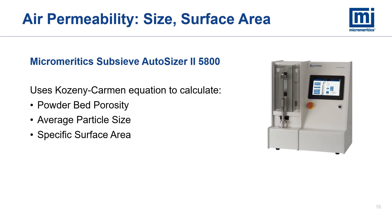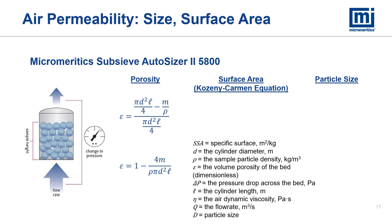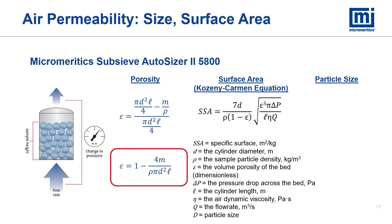The Micromeritics Sub-Sieve Autosizer 2-5800 uses air permeability and the Kozeny-Carman equation to calculate powder bed porosity, average particle size, and specific surface area. The amount of sample needed is equivalent to one cubic centimeter of skeletal volume. We used the density value calculated from the ACUPIC analysis to determine the mass needed. A powder bed is compressed to a certain height and a bed porosity is calculated. A constant airflow is applied to the bottom of the bed and the pressure drop across the powder bed is used to calculate specific surface area using the Kozeny-Carman equation. The density is then used to determine the average particle size.